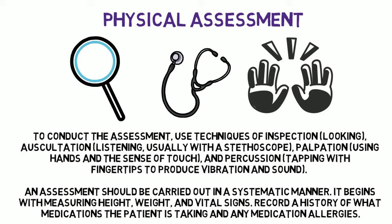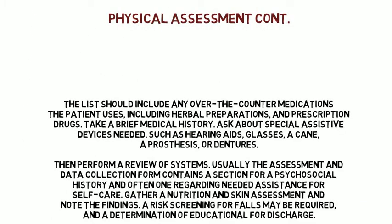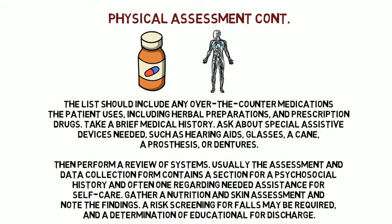An assessment should be carried out in a systematic manner. It begins with measuring height, weight, and vital signs. Record a history of what medications the patient is taking and any medication allergies. The list should include any over-the-counter medications, including herbal preparations and prescription drugs. Take a brief medical history and ask about special assistive devices needed, such as hearing aids, glasses, a cane, a prosthesis, or dentures. Then perform a review of systems. The assessment and data collection form typically contains a section for psychosocial history, assistance needed for self-care, a nutrition and skin assessment, a risk screening for falls, and a determination of educational needs for discharge.